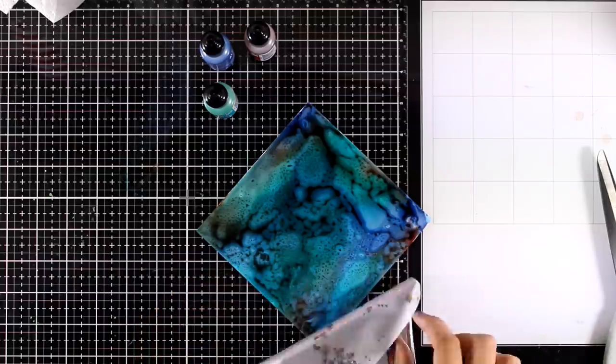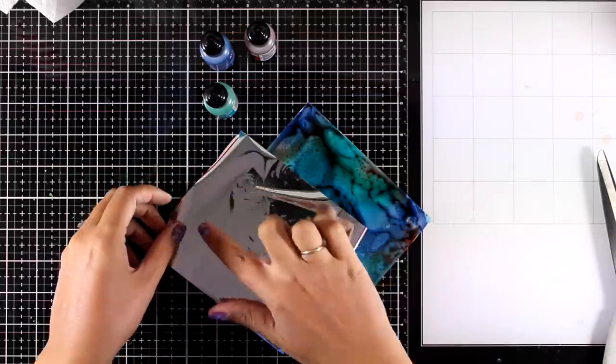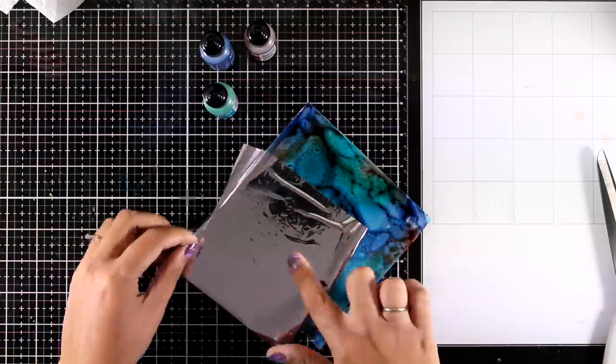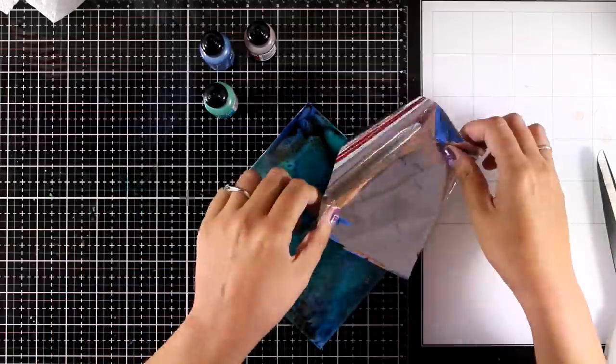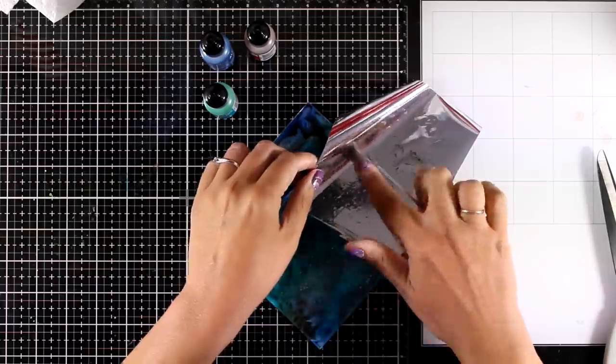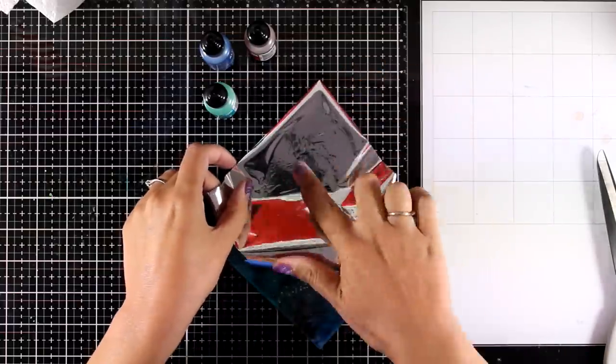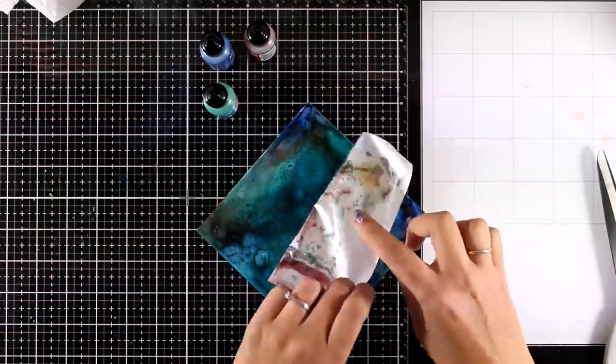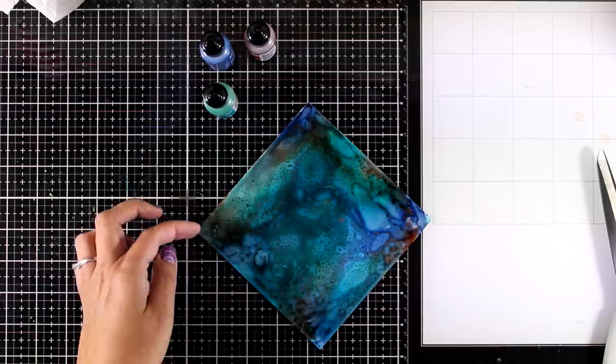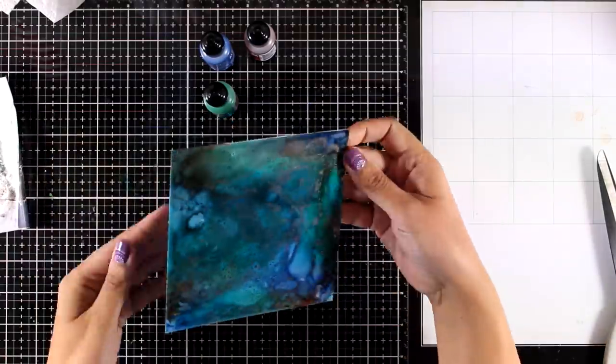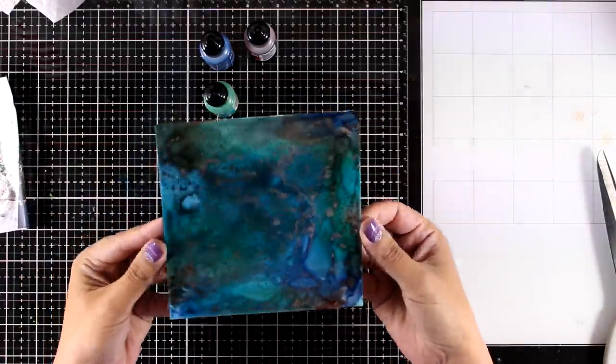Now I'm going to do another favorite technique which is foiling. I'm using this silver foil and I'm going to apply it over my yupo paper. Now there are areas where the ink is still quite sticky so this is where the silver foil is going to grab and it's going to give some lovely shiny details on my background.